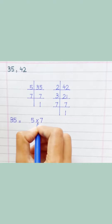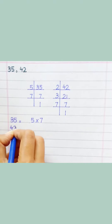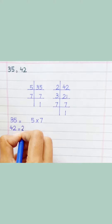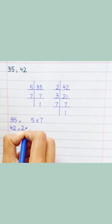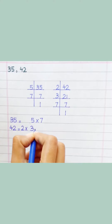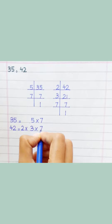Now factorizing 42: 42 equals 2 multiply 3 multiply 7.